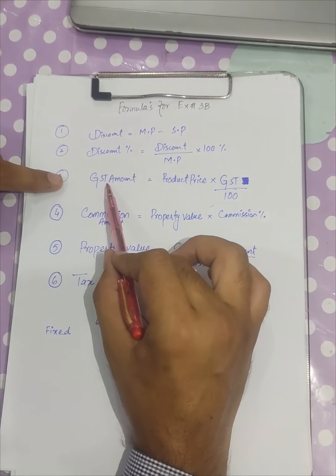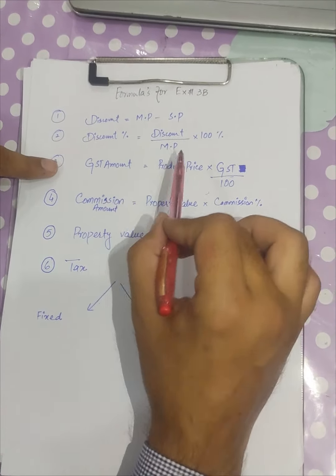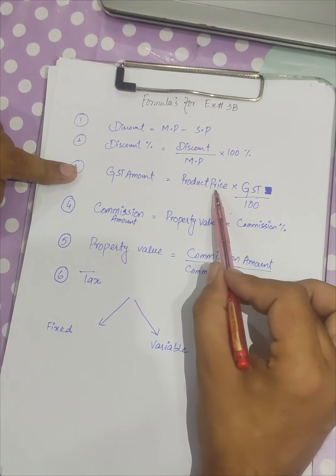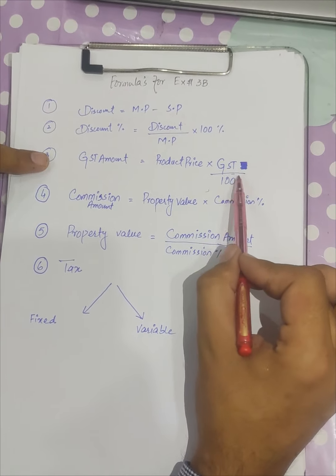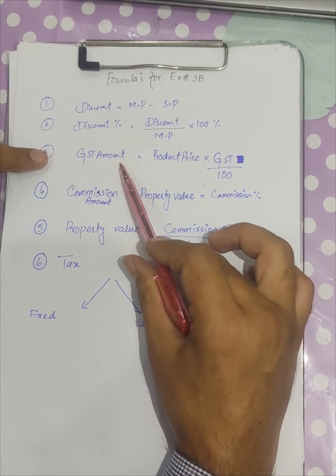In order to calculate the GST, GST stands for General Sales Tax. We can simply calculate GST by multiplying the product price by the GST rate and dividing it by 100. We will get the GST amount.